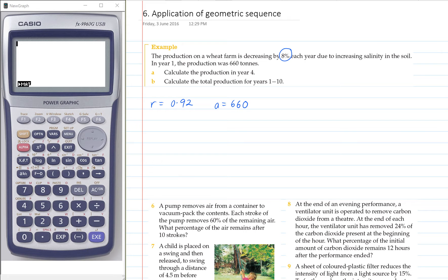And the question is asking us to calculate the production in year 4, so that's a term problem. And so we're looking for T4, and that's going to be 660 times 0.92 to the power of n minus 1, so that's to the power of 3.